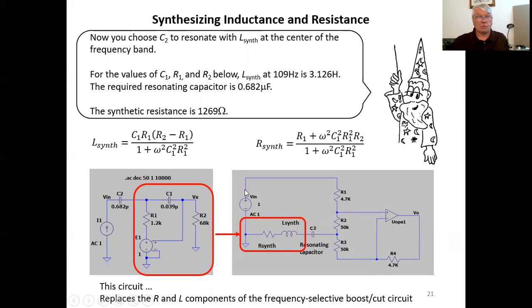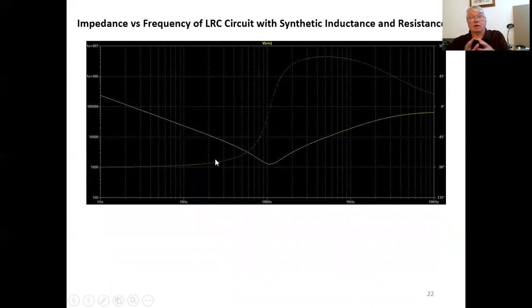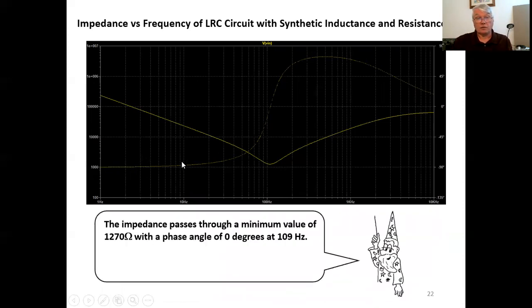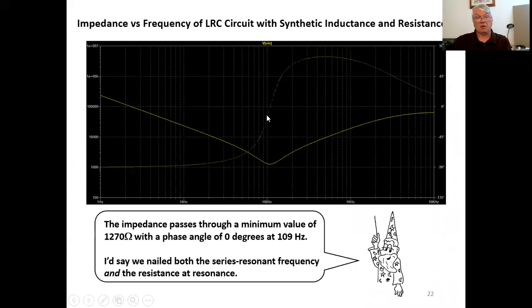So now what you do is you choose C2 to resonate with L synth at the center of the frequency band. For the values of C1 R1 and R2 below L synth at 109 hertz is 3.126 henries. The required resonating capacitor for that frequency is 0.682 microfarad. And the synthetic resistance that we obtain from these component values is 1269 ohms. So this circuit replaces the LR components of the frequency selective boost cut circuit. Here we still have the same capacitor C2 in each of those two circuits. Okay so we're in business. So here's a LTSpice plot of the impedance versus frequency of that LRC circuit using the synthetic inductance and resistance. And the impedance passes through a minimum value of 1270 ohms at 109 hertz phase angle of zero meaning it's purely resistive. I think we've nailed both the series resonant frequency and the resistance of the LRC network at resonance. This seemed to be on the right track here.